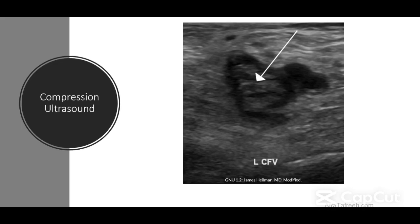Here we have an example of a compression ultrasound of the deep veins of the leg. In particular, this is the left common femoral vein of this particular patient. Normally we would expect this vein to be patent; however, as we can see here, there is clearly the presence of a clot, which is highly characteristic of what we would see on ultrasound in a patient with a DVT.